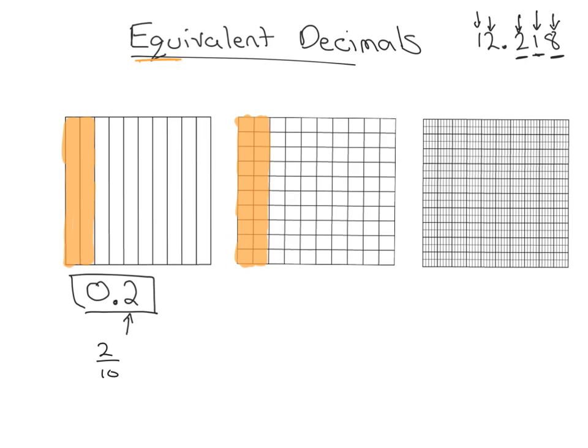In the first case I had two out of ten pieces, which would be two tenths. In this second case, if I count the blocks: one, two, three, four, five, six, seven, eight, nine, ten—and I've got two groups of ten. So I actually have 20, and this is a hundredths chart, so I've got 20 out of 100. How would I write this as a decimal?